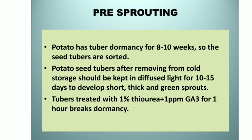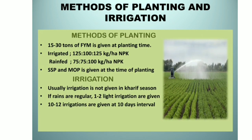Pre-sprouting: potato has tuber dormancy for about eight to ten weeks. Seed tubers after removing from cold storage should be kept in diffused light for about 10 to 15 days to develop short, thick and green sprouts. Tubers treated with 1% thiourea plus 1 ppm GA3 for one hour breaks dormancy.